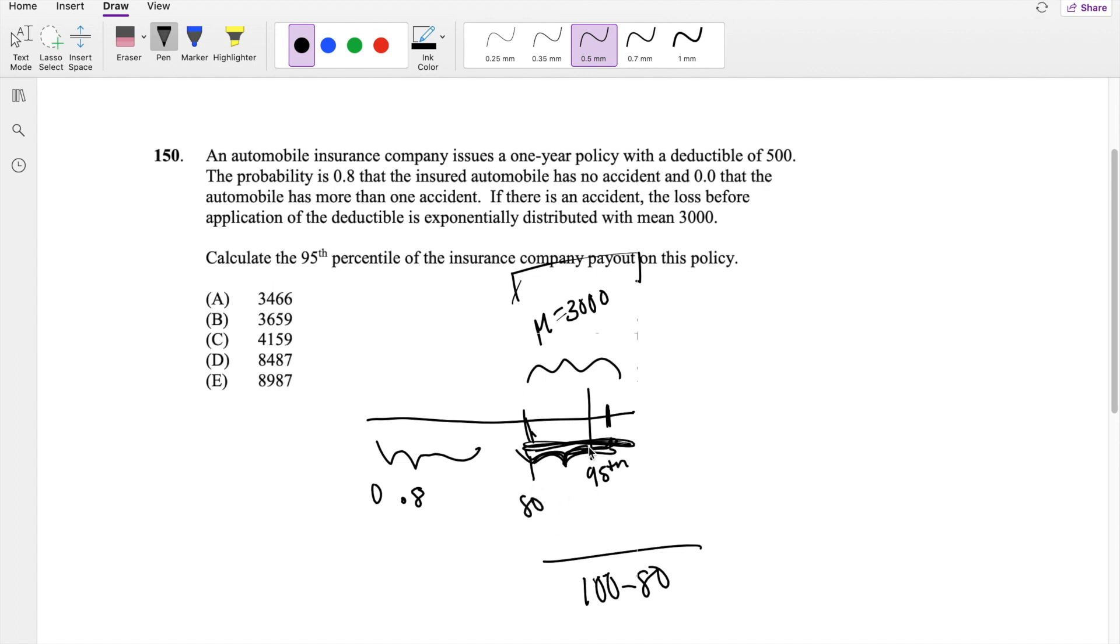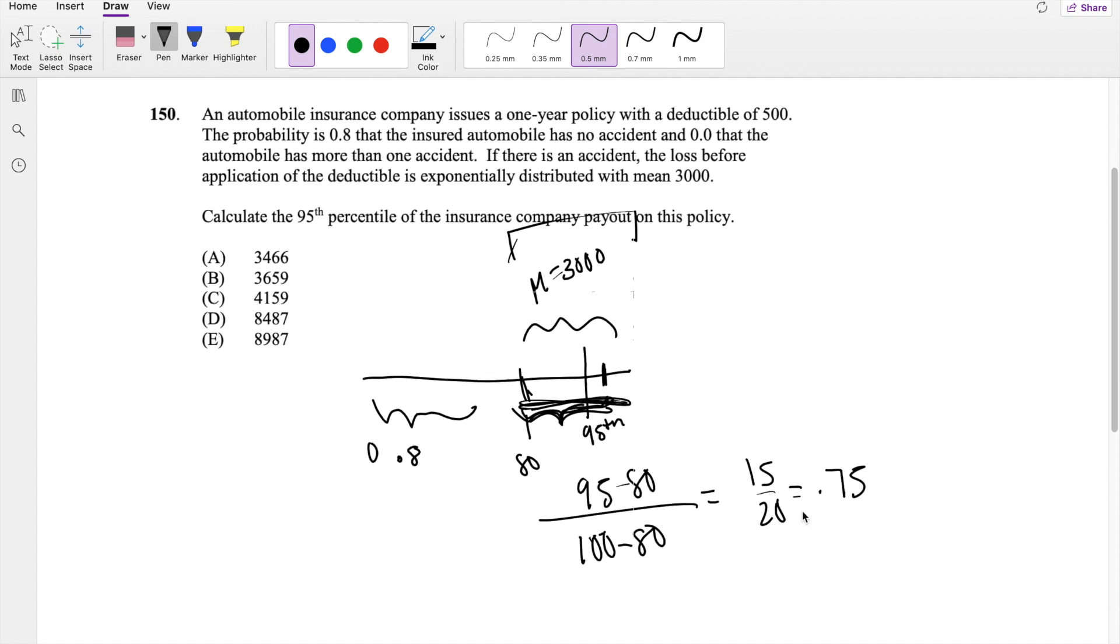And the conditional probability we're looking for is from 80 to 95. So that's 95 minus 80, which is equal to 15 over 20, which is also equal to the 75th percentile. So we're actually just technically looking for the 75th percentile of this conditional probability that they have an accident.